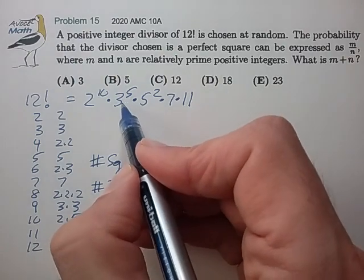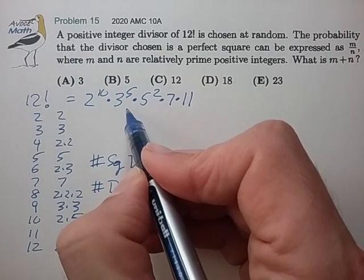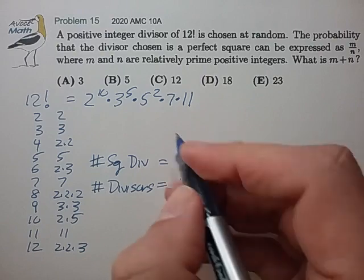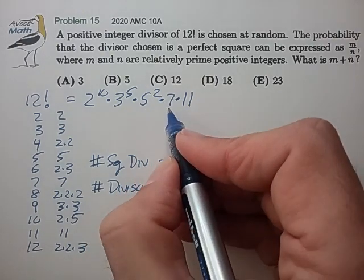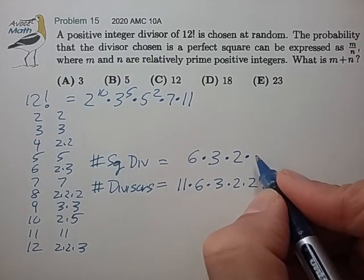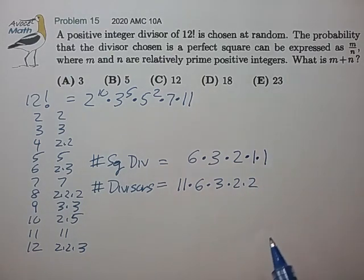The number of choices for the exponent of 3 is 0, 2, and 4. Three choices. For 5 it can be either 0 or 2. Two choices. These have to both be 0, so there's only one choice for each of those.